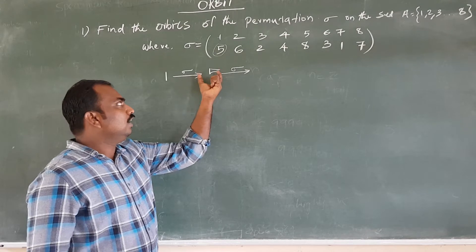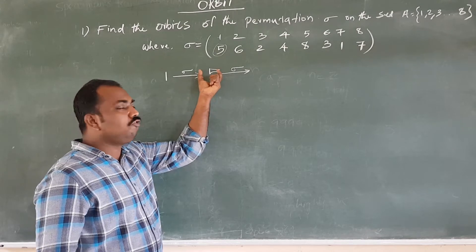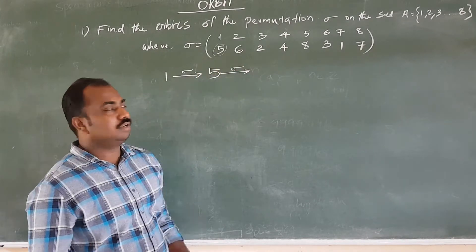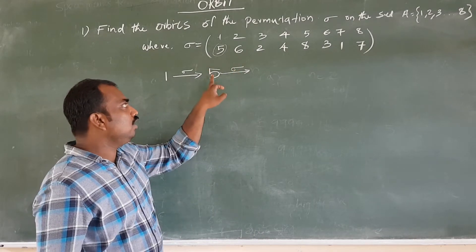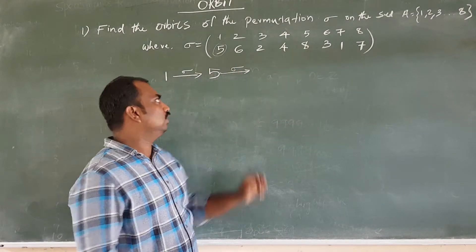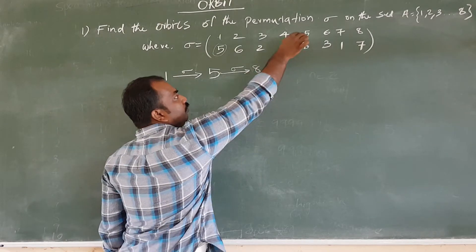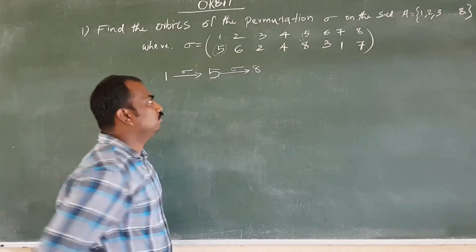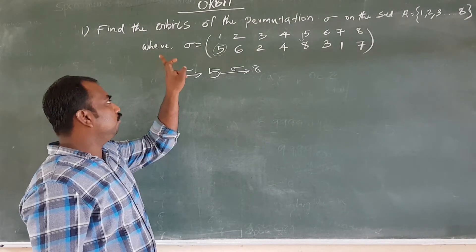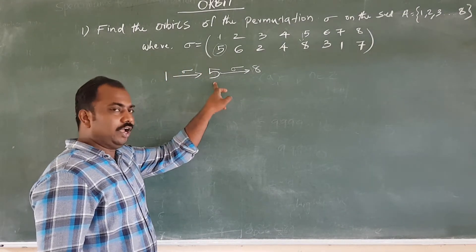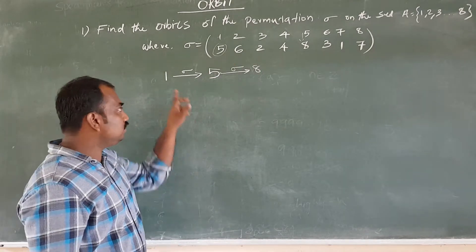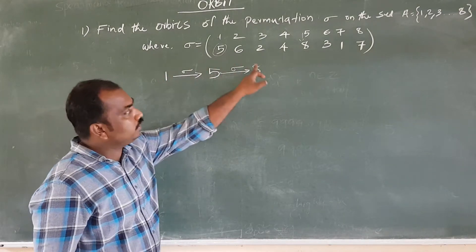That means the image of five under the permutation sigma. Five in the image — that is eight. The image of one is five, the image of five is eight. That means the second image of one is eight.